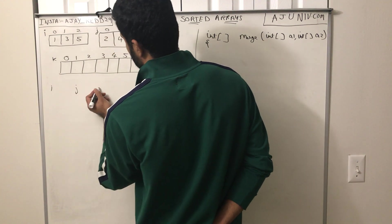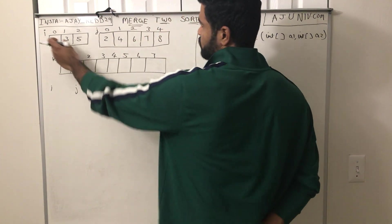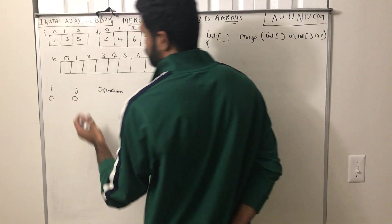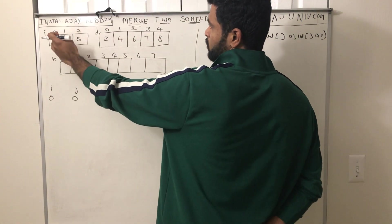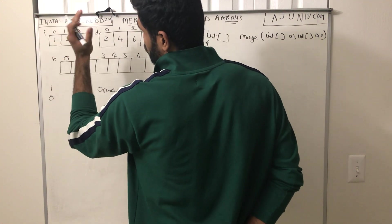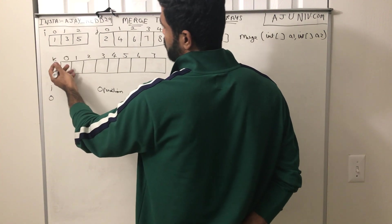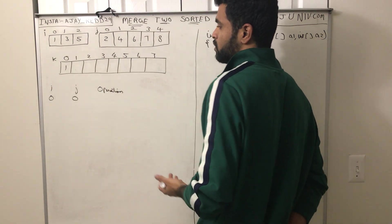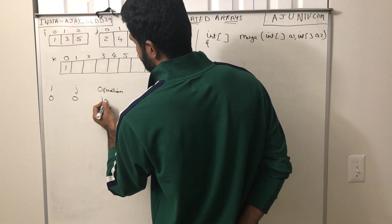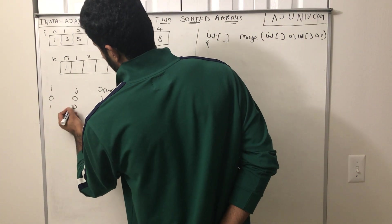Initially i is at 0 and j is at 0. Now I have to compare these two elements — 1 with 2. When I compare, 1 is less than 2, so I have to add the element which is less. So I will add element 1 to the new array, and then increment i. After incrementing i, i will be 1 and j is still at 0.